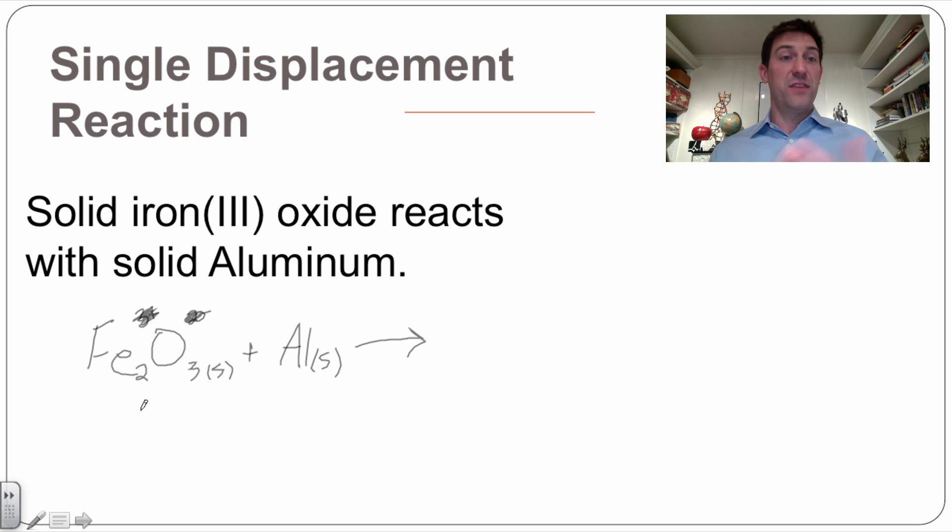Well, if this is a single displacement reaction, this positive can only come over and break off another positive or this aluminum can only break off that iron. And it will. So in other words, it's going to make aluminum oxide and it's going to leave that iron all by itself.